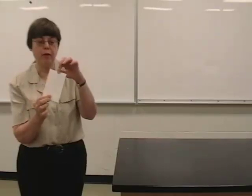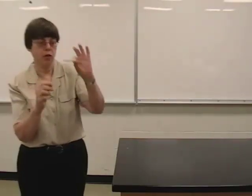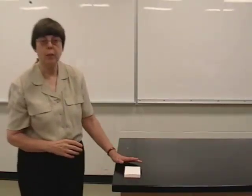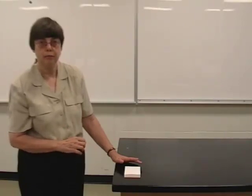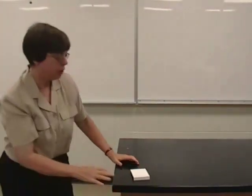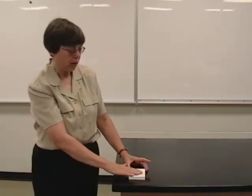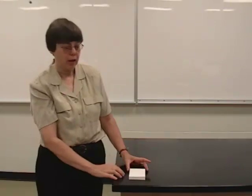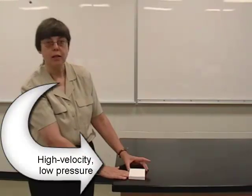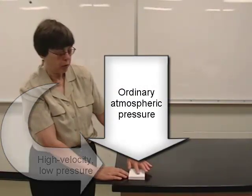Next, I have a 3x5 card and I'm going to fold it so it makes an upside-down U shape. I'm going to put that on the table and blow through the tunnel. I want you to predict what's going to happen to the card when I blow through the tunnel. You can see that the card pretty much stayed still, and perhaps you can even see that when I blew through the tunnel, the top bowed down a little bit. When I blow through the tunnel, the air has a high velocity — that's a low pressure. There's ordinary atmospheric pressure on top of the card, and that pressure difference pushes the card down onto the table.